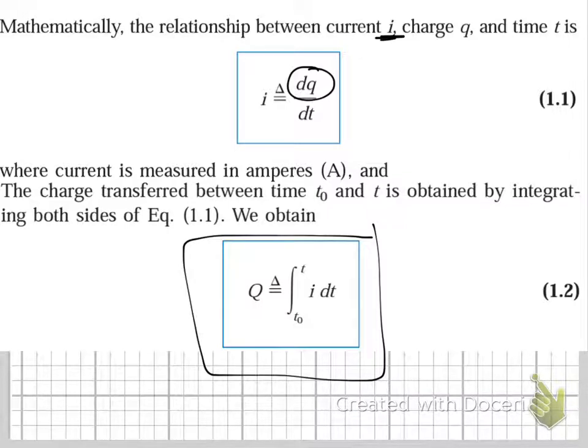The question can be asked in two different ways. You can be given a graph that shows the change of charge over time or a graph that shows the change in current over time and then you may be asked to find either the current or the charge and then you apply one of these two formulas. In EBN there's no formula sheet so you might as well start memorizing formulas right now.